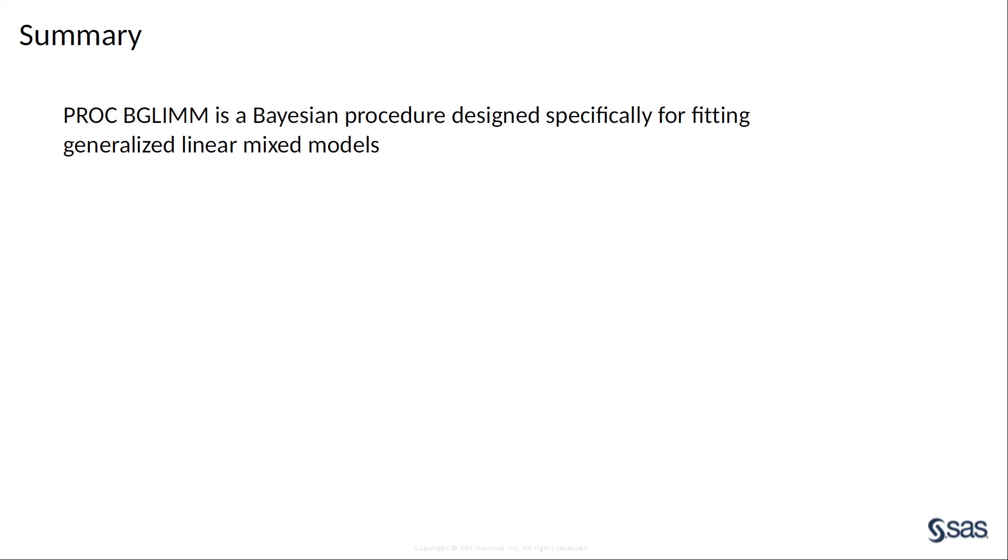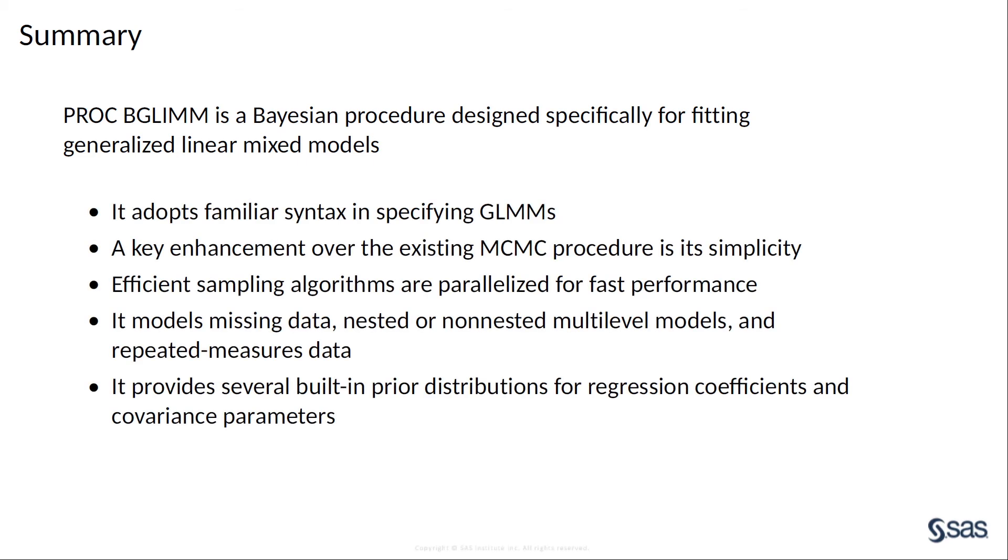To summarize, PROC BGLIM is a Bayesian procedure that is tailored for generalized linear mixed models. It adopts familiar SAS syntax in specifying GLMMs. It is simpler than the MCMC procedure. It runs efficient sampling algorithms in parallel for faster performance.